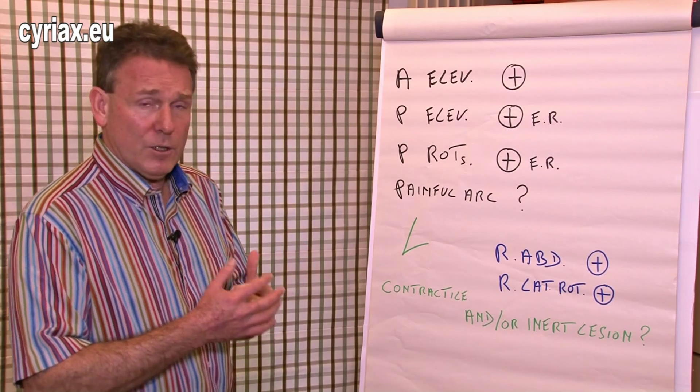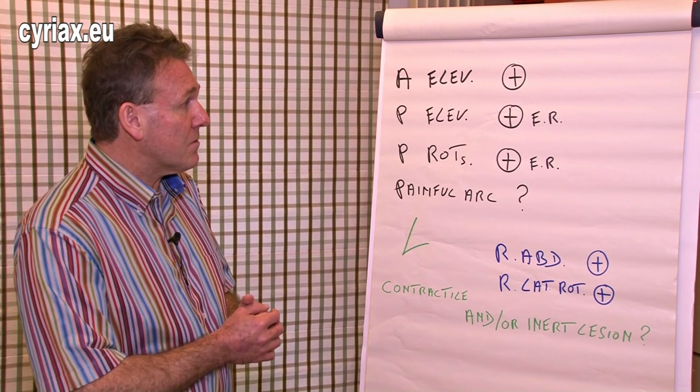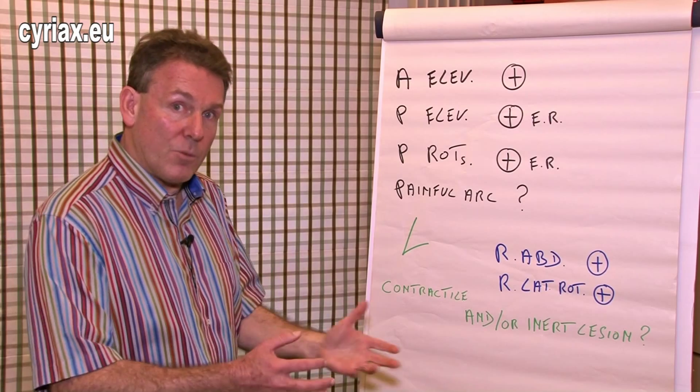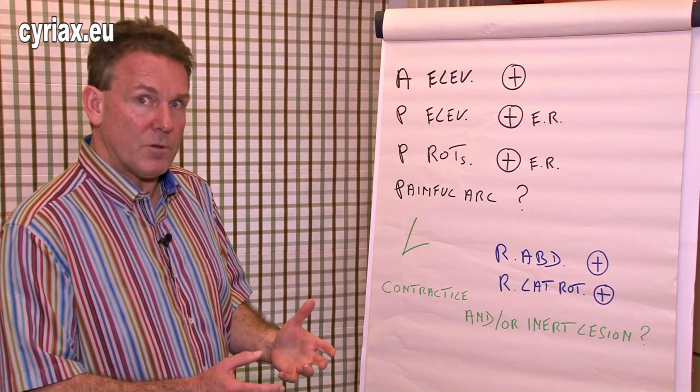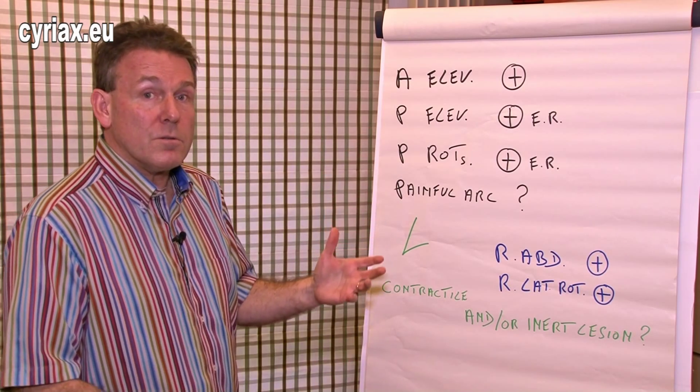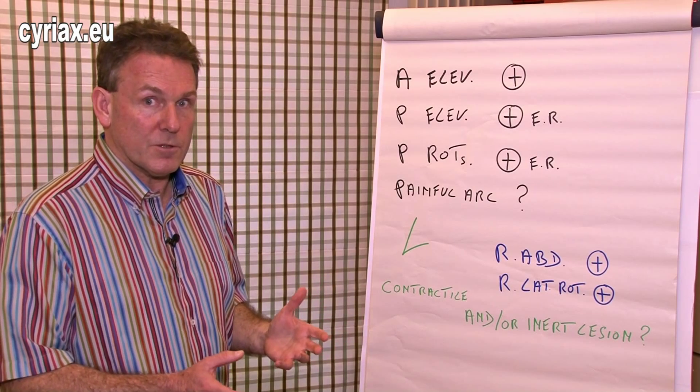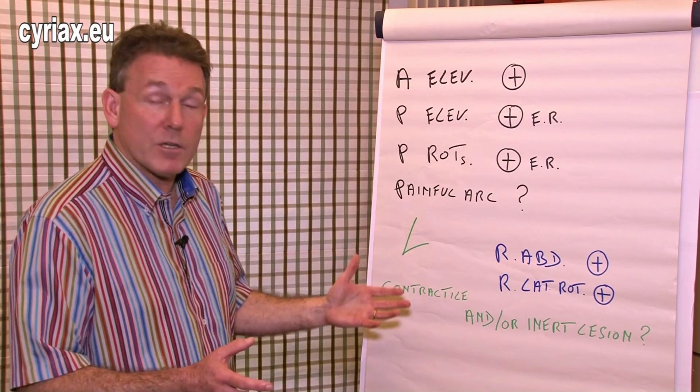So the question is, does the patient have a single lesion, double lesion or even a triple lesion? Or is it a simple chronic subdeltoid bursitis? How can I differentiate that?